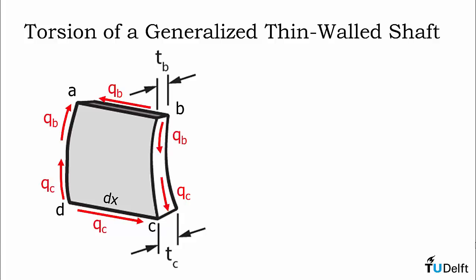With the shear flow defined we can now enforce equilibrium along the length of the shaft. Looking at the forces acting in the direction of the axis of the shaft we find that the resultant shear force QB times DX along length AB is equal to the resultant shear force QC times DX along length DC. Simplifying we find that QB must equal QC and thus the shear flow is constant around the perimeter of the section.